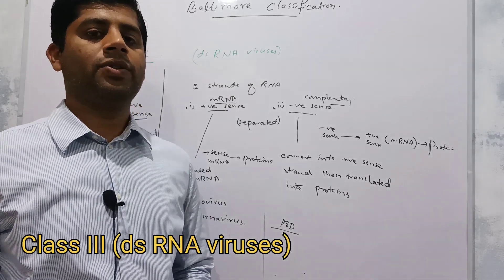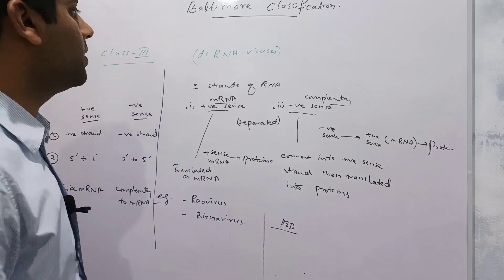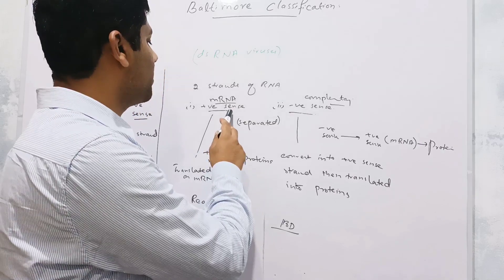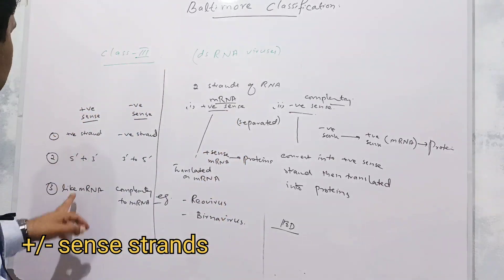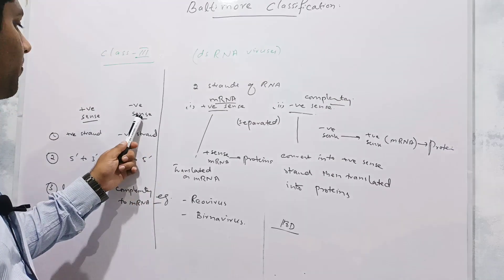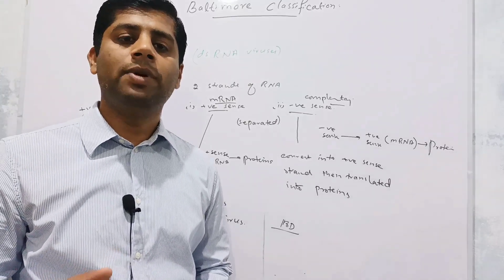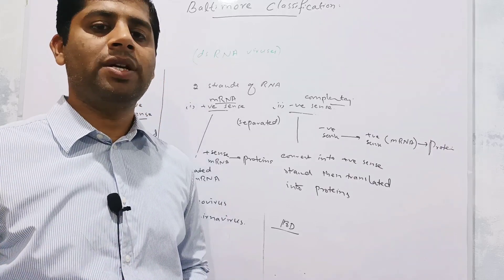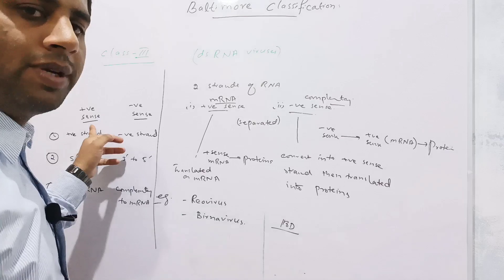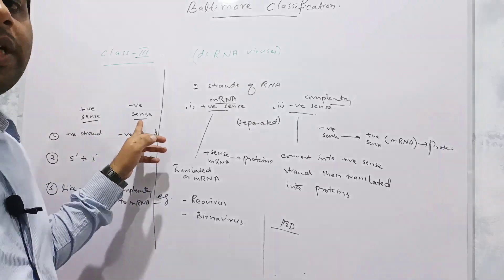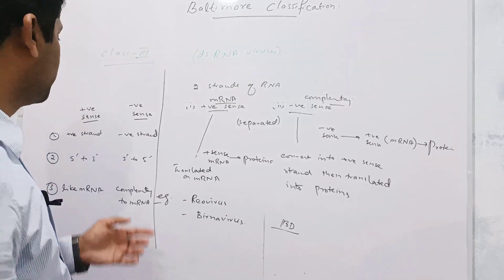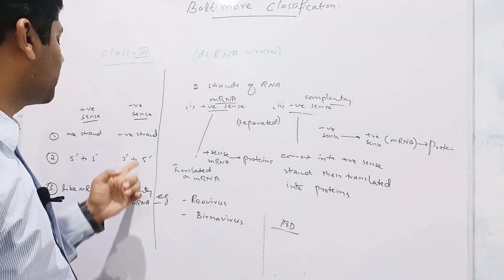The third class comprises double-stranded RNA viruses. These viruses have two strands of RNA — one is called the positive strand and the other is called the negative strand. The positive strand resembles messenger RNA and can readily be translated into proteins. The negative strand has nucleotide sequences complementary to messenger RNA, so it must first synthesize a complementary positive strand before translation. The positive strand has a 5' to 3' direction, while the negative strand has a 3' to 5' direction.